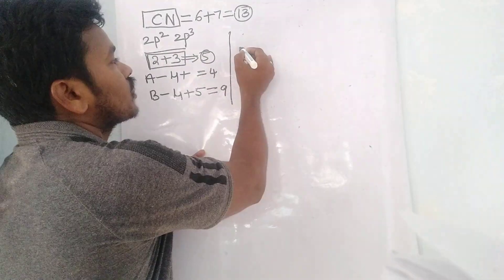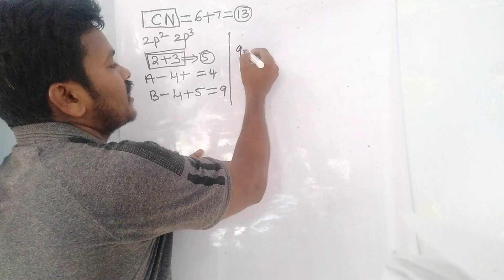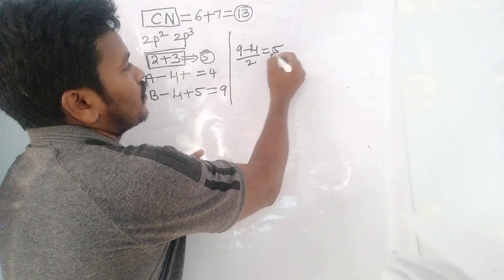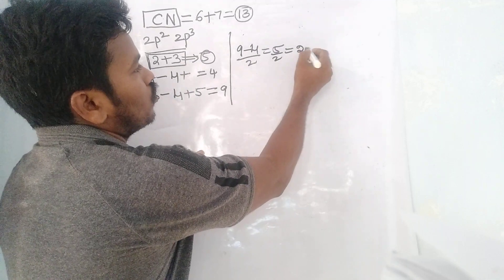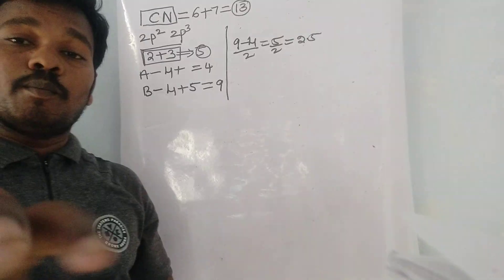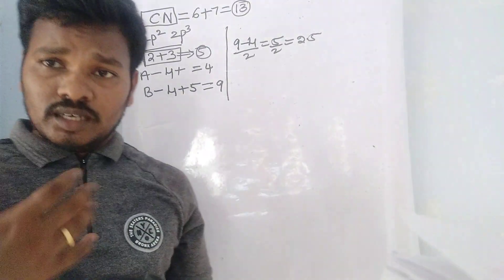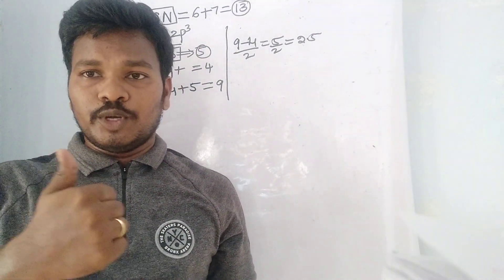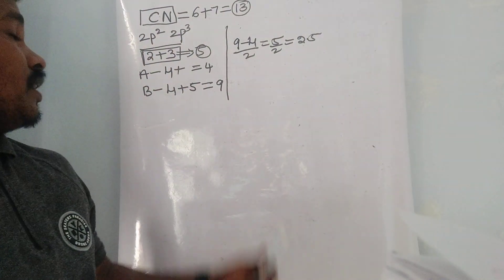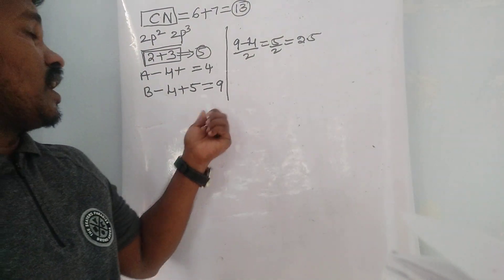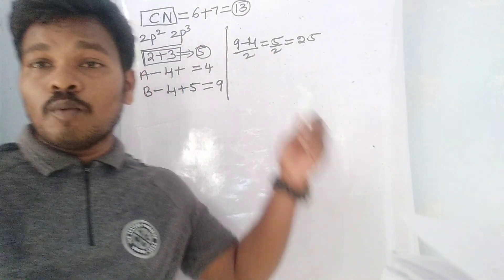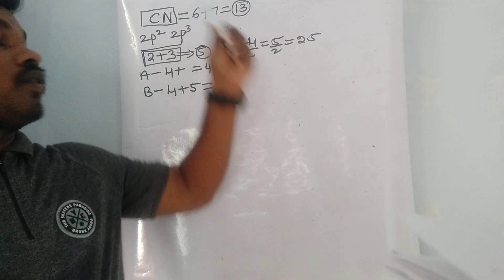Bond order = (bonding − anti-bonding) / 2 = (9 − 4) / 2 = 5 / 2 = 2.5. I have already made a video on how to calculate bond order easily — I will mention that in the card, please check it. So for this molecule, bond order is 2.5, with 4 anti-bonding electrons and 9 bonding electrons.